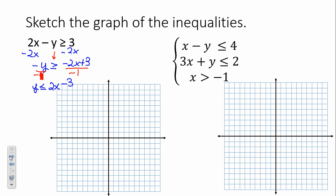So where do I go to graph this? My b, my beginning point, is negative 3 — that's my y-intercept. My slope is rising 2, running 1. I make a solid line since it's less than or equal to. To determine shading, I try the origin: is 0 less than or equal to 2 times 0 minus 3? Is 0 less than or equal to negative 3? No. So we don't want the origin — we're shading below.